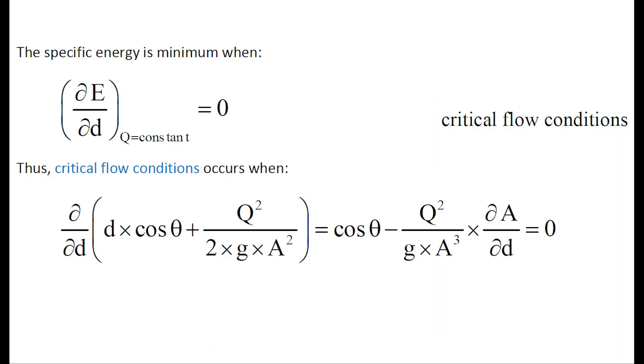The specific energy is minimum when the derivative of the specific energy with respect to the water depth equals 0, with a constant flow rate. Thus, we can rewrite the critical flow condition as shown in front of us.